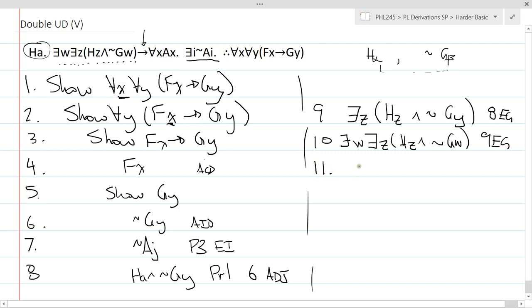Okay. So now I'm ready to modus ponens. I get for all X, AX, and that's 10 premise with two modus ponens. And on line 12, I can UI to match my line seven. And I get AJ. And that's 11 UI.